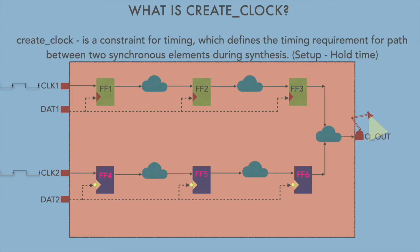Defining create_clock: create_clock is a constraint for timing which defines the timing requirement for path between two synchronous elements during synthesis, for example setup time and hold time, such that whenever data is launched by a flip flop, it is reliably captured by the adjacent flip flop.